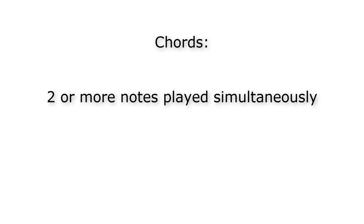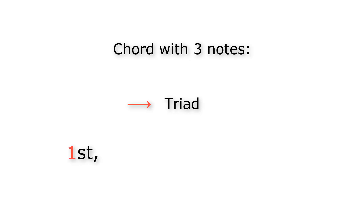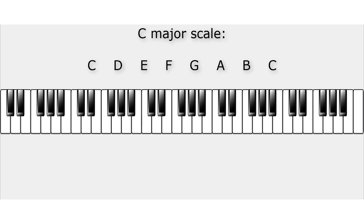You can form a chord by playing two or more different notes simultaneously, but in practice a chord usually consists of three or more notes. In this video we will only look at chords that consist of exactly three notes. Those chords are the most basic form of major and minor chords. Such a chord with three notes is also often called a triad, and consists of the first, third and fifth notes of the major or minor scale. Let's first look at major triads, starting with the C major triad. The three notes are the first, third and fifth notes of the C major scale: C, E and G. C is called the root of the C major triad.